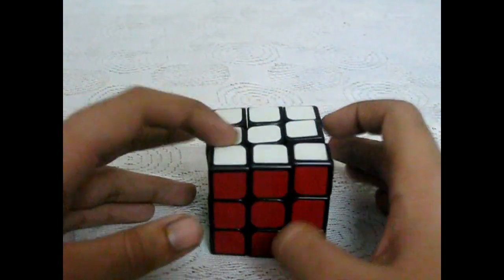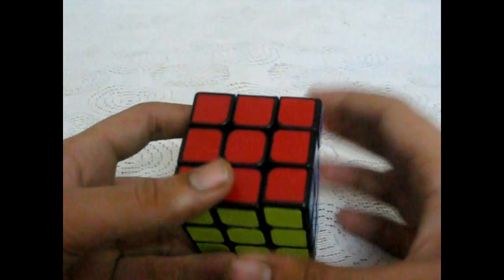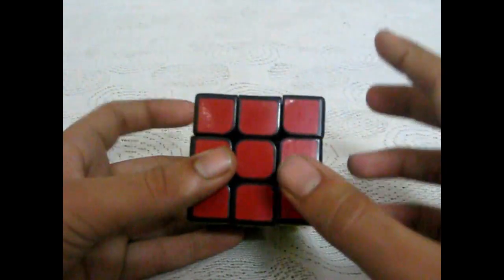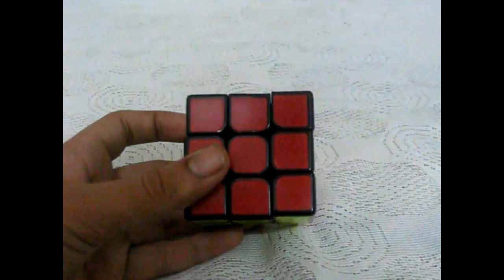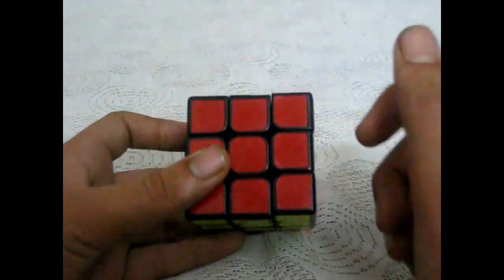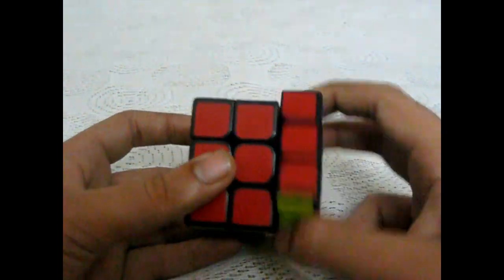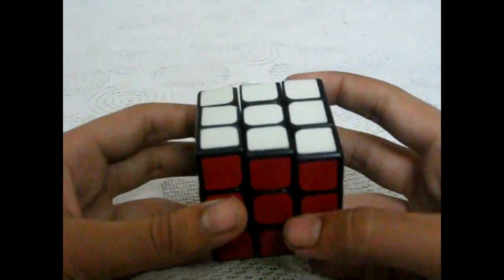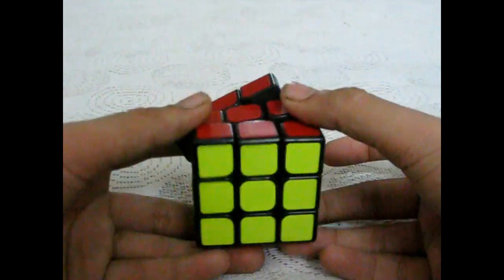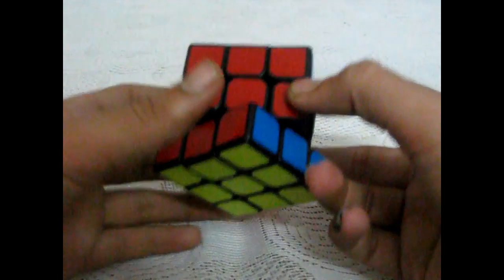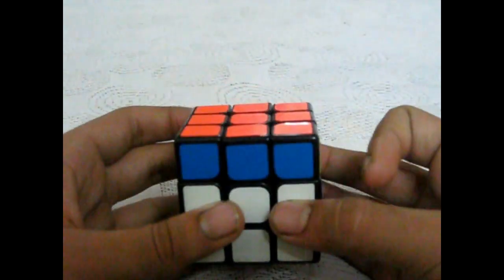Now, when you have to do a clockwise move, the name of the layer will appear and you have to move that layer once clockwise like R, L, U, D, F or B.